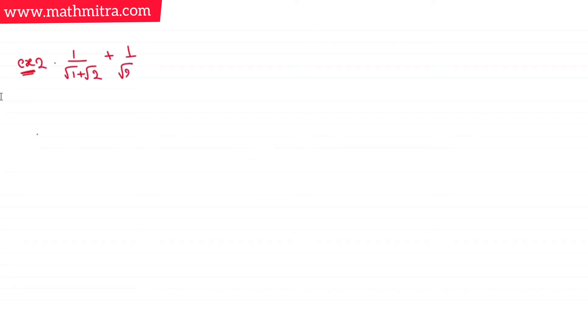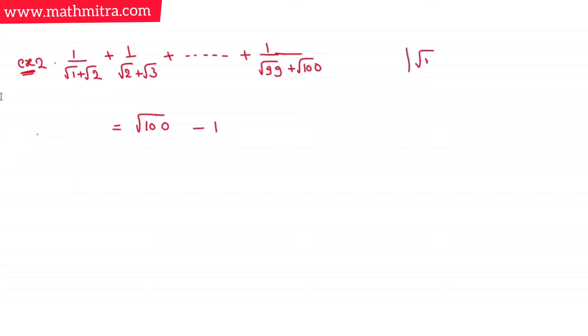Suppose you have the example: 1/(√1+√2) + 1/(√2+√3) + ... + 1/(√99+√100). The last term tells us n = 100. Using our formula, the sum equals √100 − 1 = 10 − 1 = 9. The answer is 9.